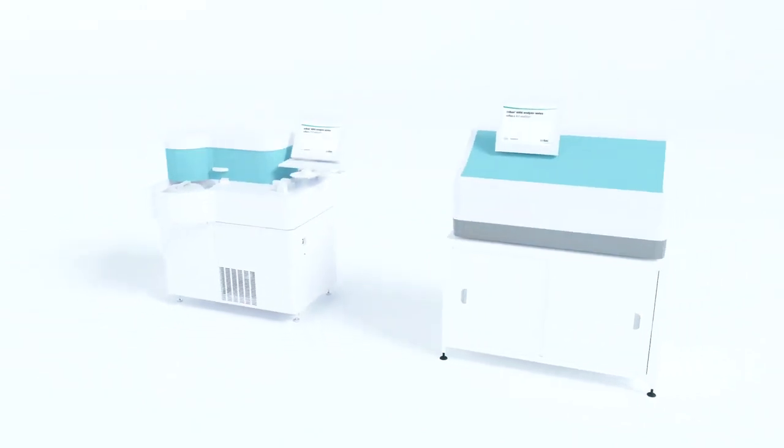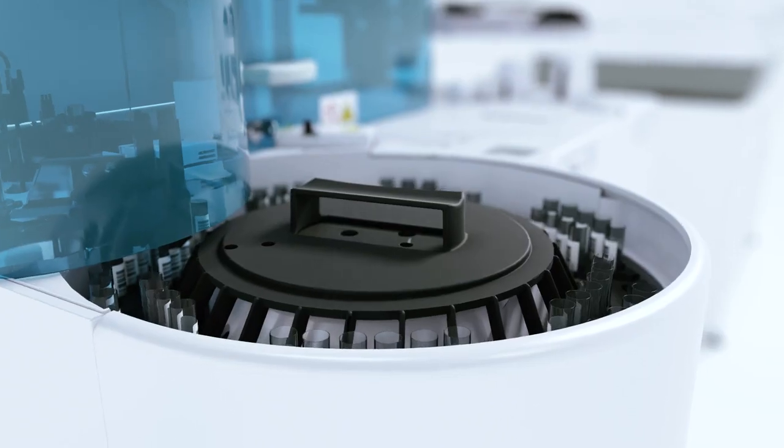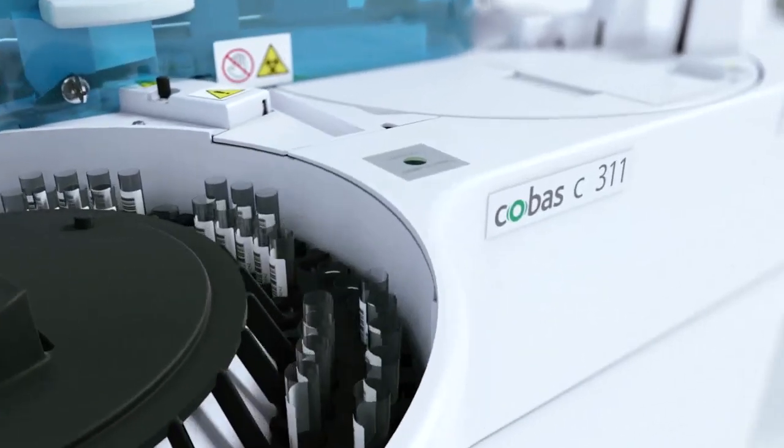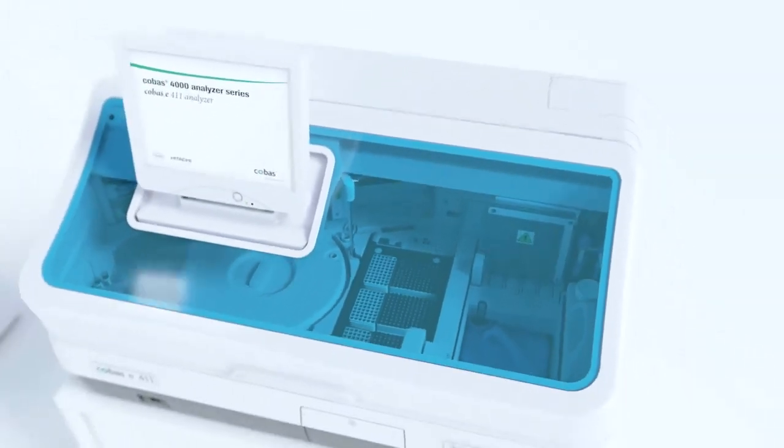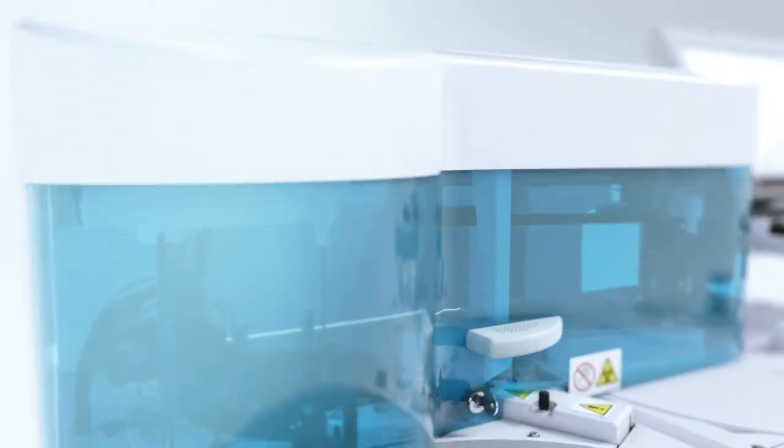The Cobas 4000 analyzer series offers a full serum work area solution. It consists of the Cobas C311 clinical chemistry analyzer and the Cobas E411 immunochemistry analyzer. This is a flexible solution for panel testing in any lab size, as well as routine testing in labs with a throughput of 50 to 400 patient samples per day.